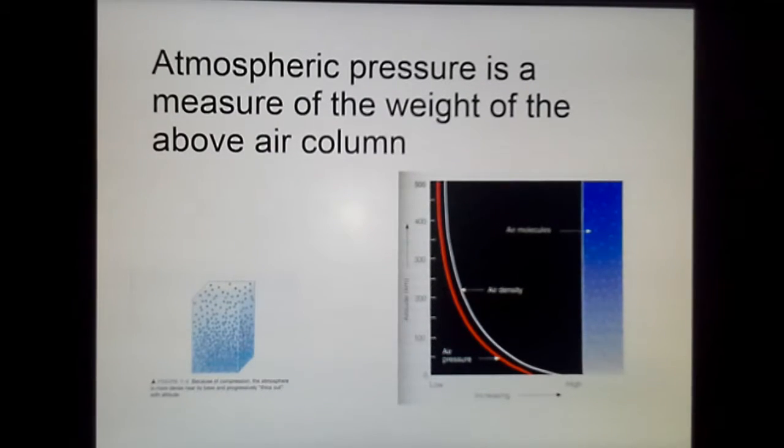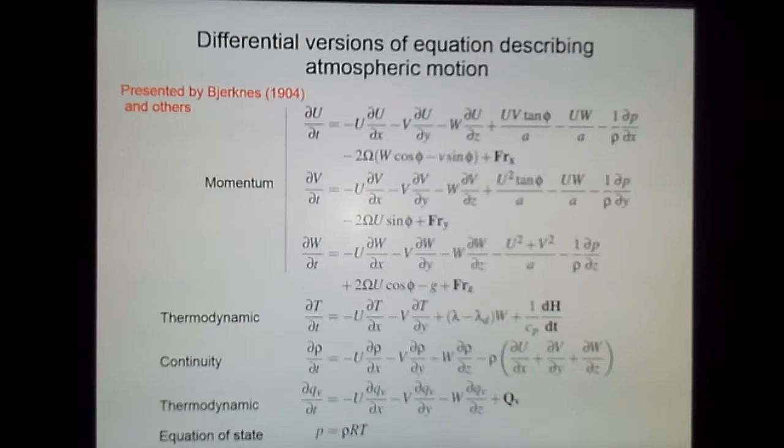Before we go to the equations of the atmosphere, we need to say a few words about atmospheric pressure. The atmospheric pressure is a fundamental variable describing the atmosphere. It is basically a measure of the weight of the air column above where you measure the pressure. If you have a lot of air and dense air, you have high pressure. Dense means generally cold.